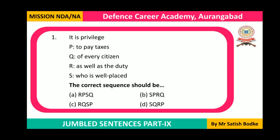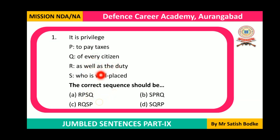Now let's solve the first question in today's session. There are five parts of the sentence. The first part reads: 'It is privilege as well as the duty of every citizen.' We will need to use a relative clause beginning with the relative pronoun 'who.'